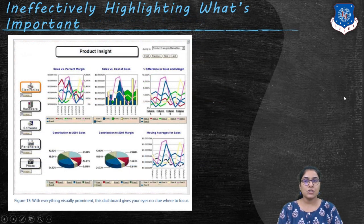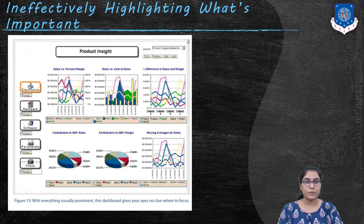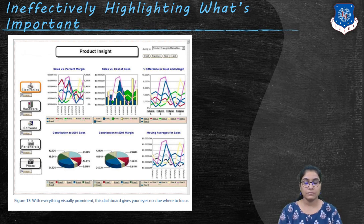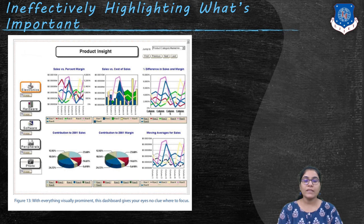The next issue is ineffectively highlighting what's important. Take a look at the dashboard displayed on the screen. Everything in this dashboard is visually prominent and catching your attention, and nothing in particular grabs your attention. When this happens, the dashboard has failed. You should be able to look at a dashboard and have your eyes immediately drawn to the information that is the most important. When everything is visually prominent, nothing stands out.